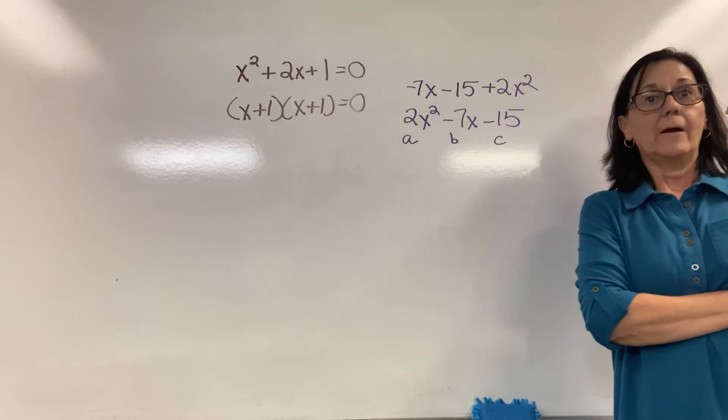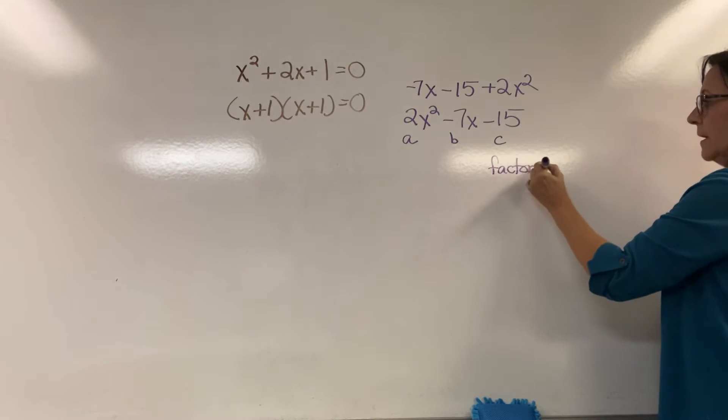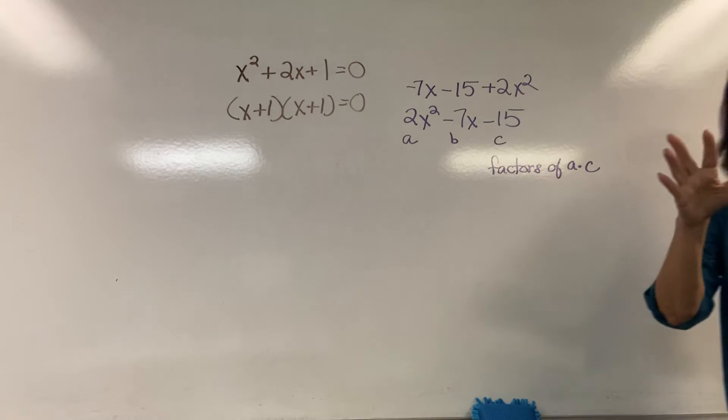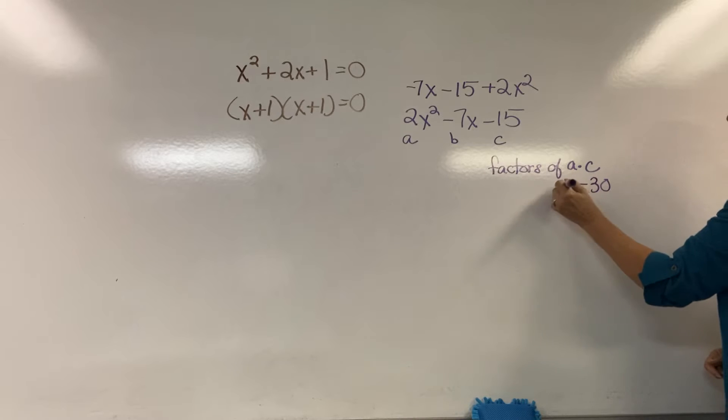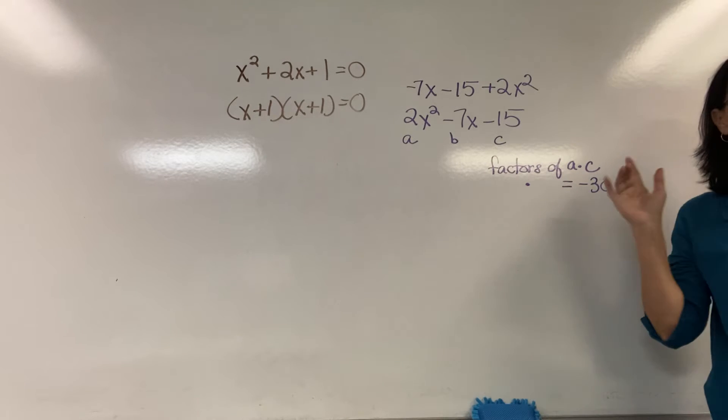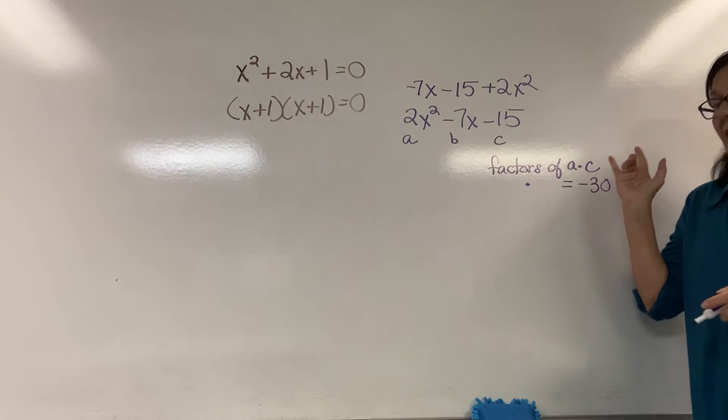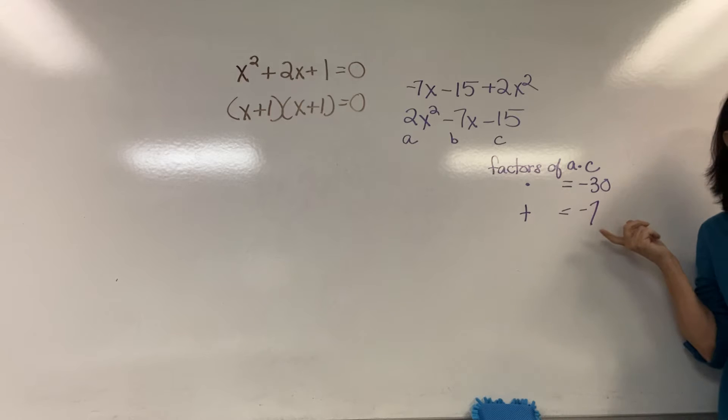Here's the difference. We're going to look for factors of a times c. What's a times c here? It is negative 30. 2 times negative 15. So we're looking for factors of negative 30 so that we multiply them, it equals negative 30. Normally we just look at the value of c, but now it's going to be factors of a times c such that we add them and they equal the b value. So this second piece didn't change.